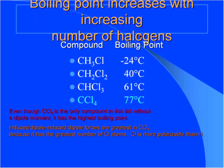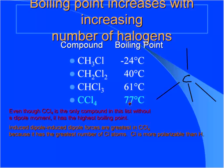Now let's increase the number of halogens and see what happens to the boiling point. You can see a steady increase. Interestingly, carbon tetrachloride does not have any net dipole moment — four symmetric vectors simply cancel — so CCl4 has no net dipole moment. But look at its boiling point — it is still high. This trend is clearly towards increasing chlorine substitution and increasing boiling point.